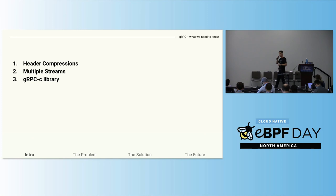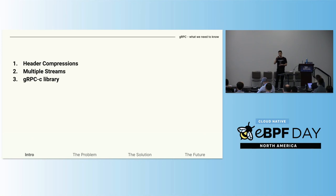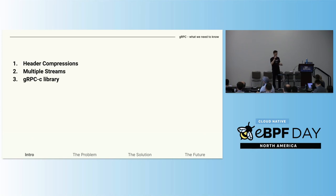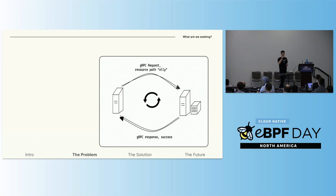gRPC, like every other protocol we know of, is implemented in different libraries. The main library that I will discuss today is the gRPC C library. It is used by a lot of languages, including Python. So today we are going to implement observability for the gRPC C library.